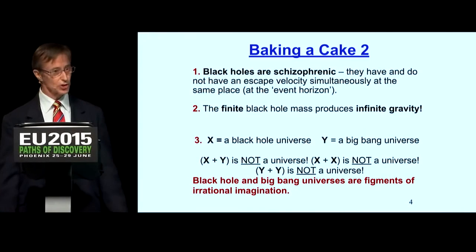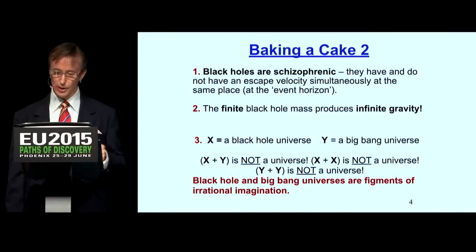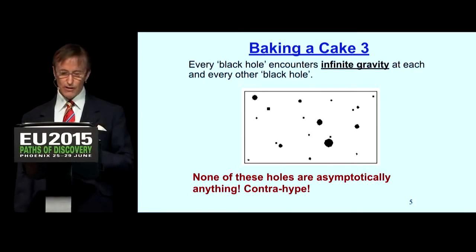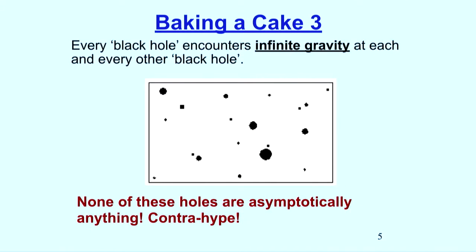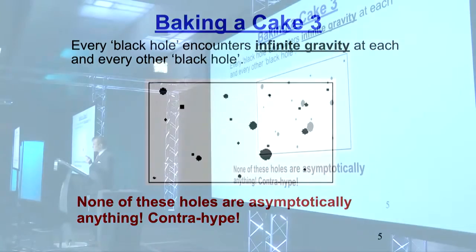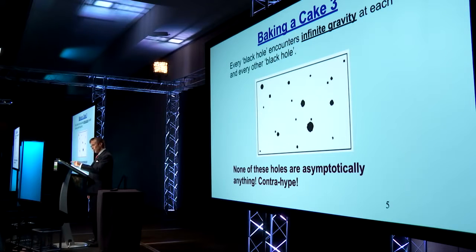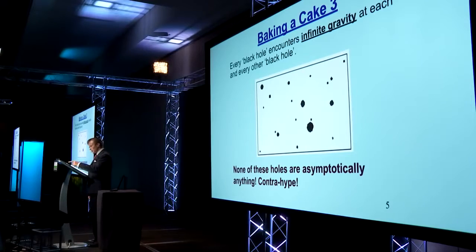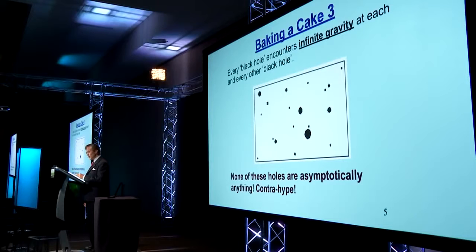X is a black hole universe and Y is a Big Bang universe. X plus Y is not a universe — neither is X plus X or Y plus Y — because general relativity is a non-linear theory; you can't just add solutions together. Furthermore, every black hole has infinite curvature at its singularity. If you go from one black hole to another, you encounter infinite gravity at every step. That is not asymptotically flat, which violates the definition of a black hole universe. It's supposed to be asymptotically flat at the very least.